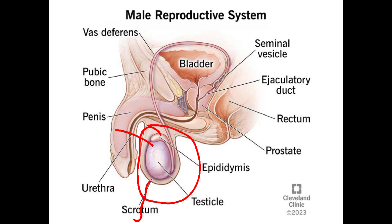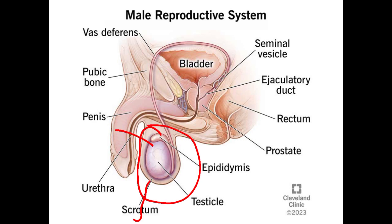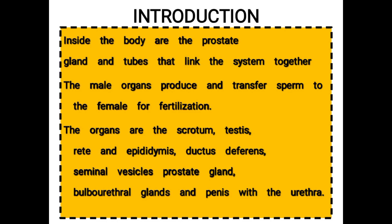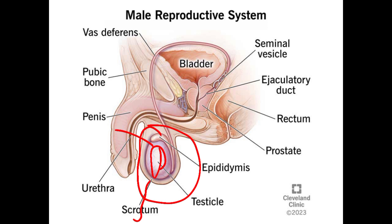The function of the scrotum is that it forms a pouch in which the testis are suspended outside the body. We can see the testis inside the scrotum. The testis are suspended in it to keep them outside the body and also to keep them at a temperature slightly lower than the rest of the body — around 34.4 degrees Celsius — in order to enable the production of viable sperm.